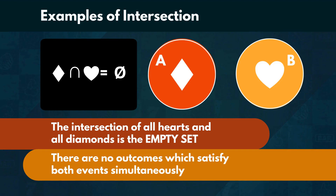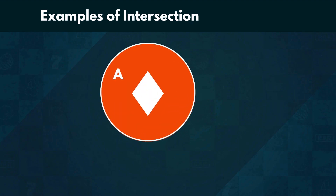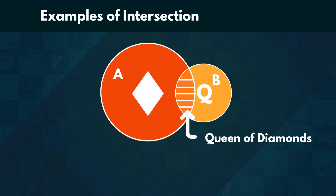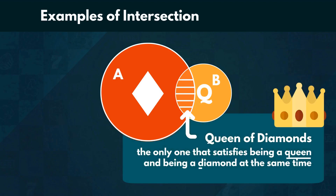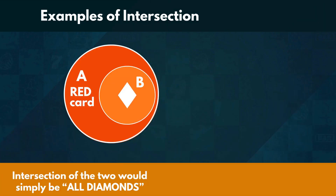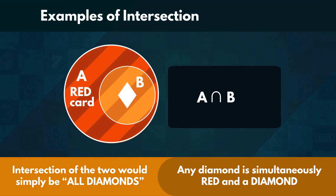Now you see why we needed this notation. Let's consider a different example. The intersection of all diamonds and all queens is represented by the queen of diamonds. That card is the only one that satisfies being a queen and being a diamond at the same time, so nothing else is included in the intersection. In the example with red cards and diamonds, the intersection of the two would simply be all diamonds, because any diamond is simultaneously red and a diamond. We would write this as A intersect B equals B.